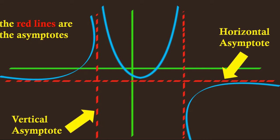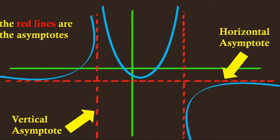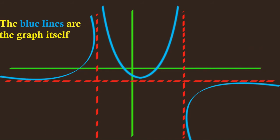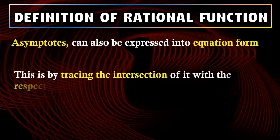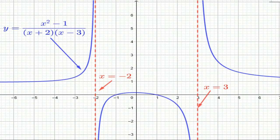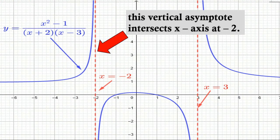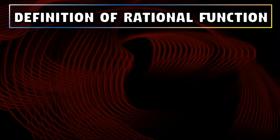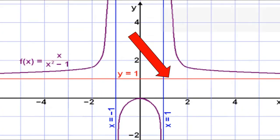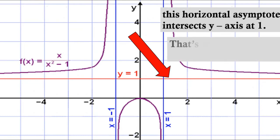On the asymptotes, you can see the graph gets closer but didn't cross the border of it. The blue lines here are the graph itself. Asymptotes can also be expressed in equation form by tracing the intersection of the line to its corresponding axis. Take a look on this vertical asymptote — it intersects the x-axis at negative 2, so it is expressed as x equals negative 2. Now take a look on this horizontal asymptote — it intersects the y-axis at 1, so it is expressed as y equals 1.